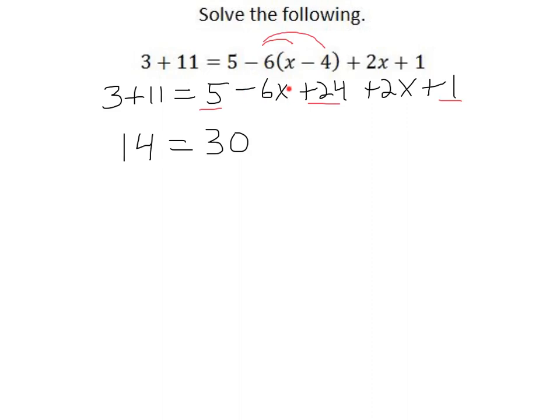Next, minus 6x. And we have this plus 2x. So these two terms are like. Minus 6 plus 2 is minus 4. So we have minus 4x.